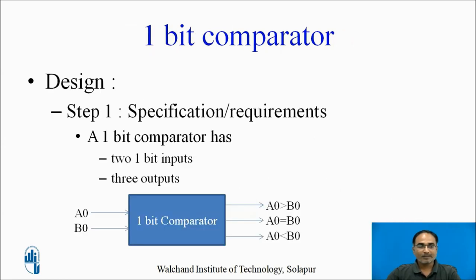So let us design a one-bit comparator. Step one is the specification or the requirement. A one-bit comparator has two inputs, both are one bit, and three outputs. In the block diagram, you have a0 and b0 as two inputs, and the outputs are: a0 is greater than b0, a0 is equal to b0, or a0 is less than b0.